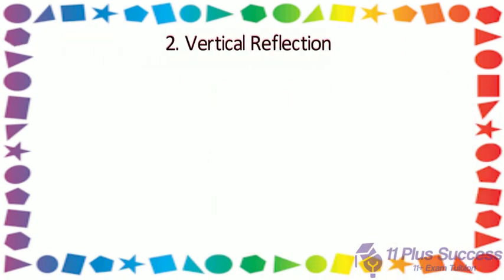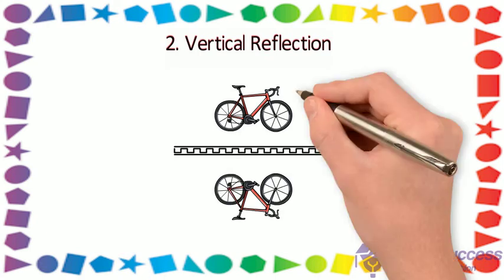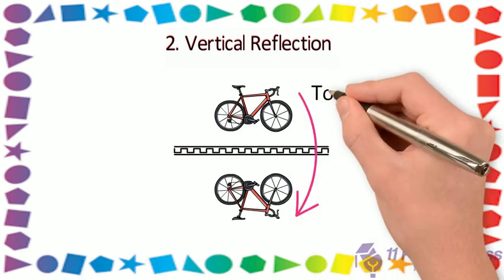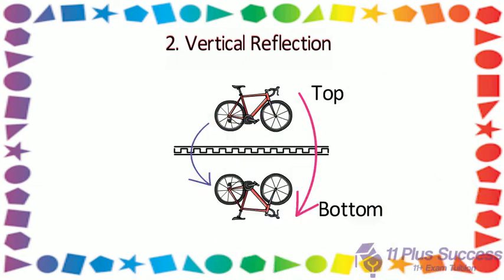2. Vertical reflection: an object is flipped over vertically to make a vertical reflection, and in a vertical flip or reflection, the top side becomes the bottom, and vice versa.